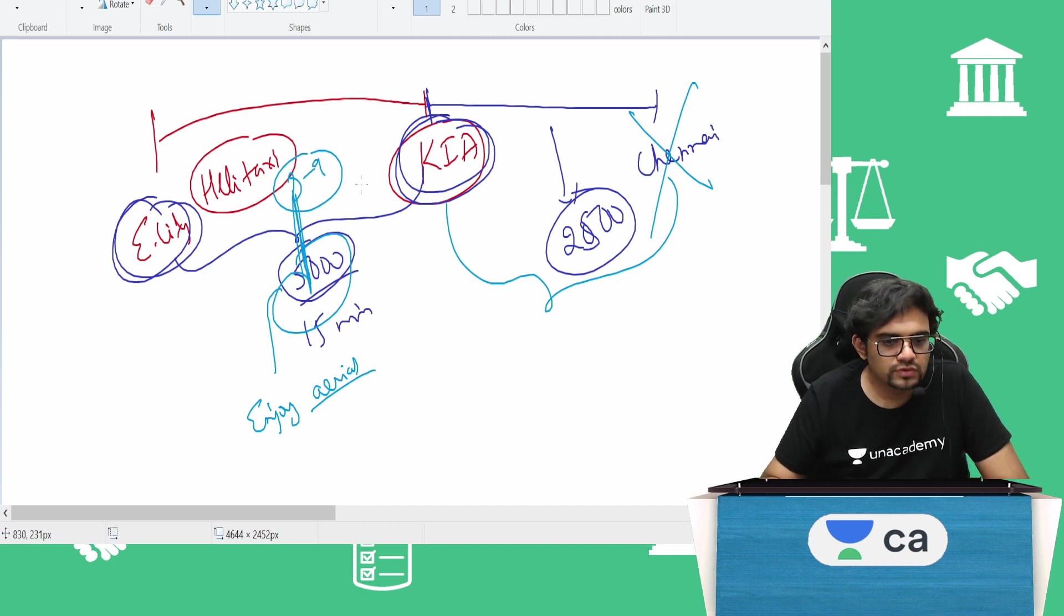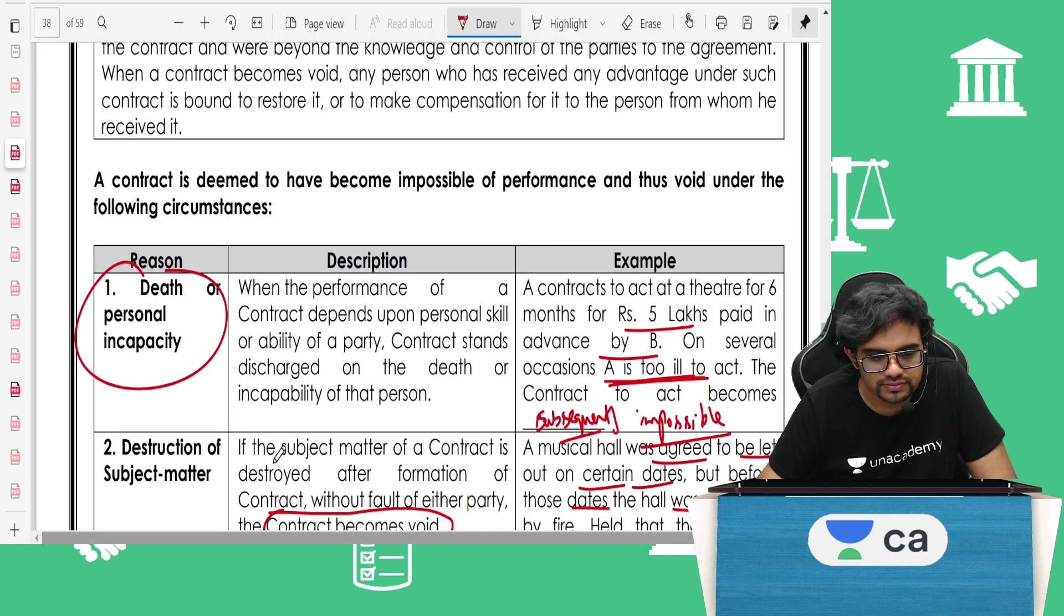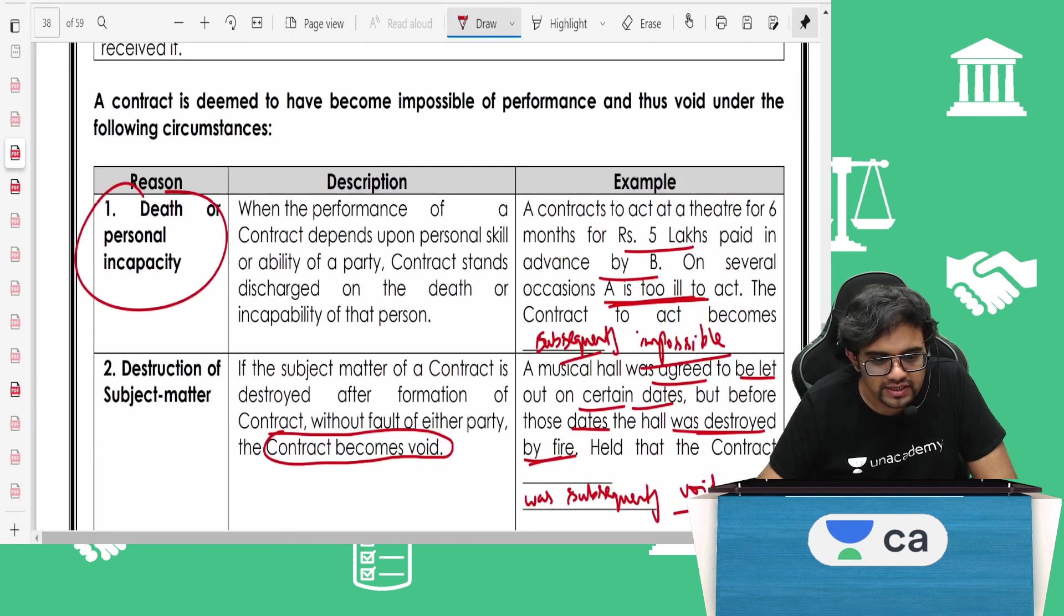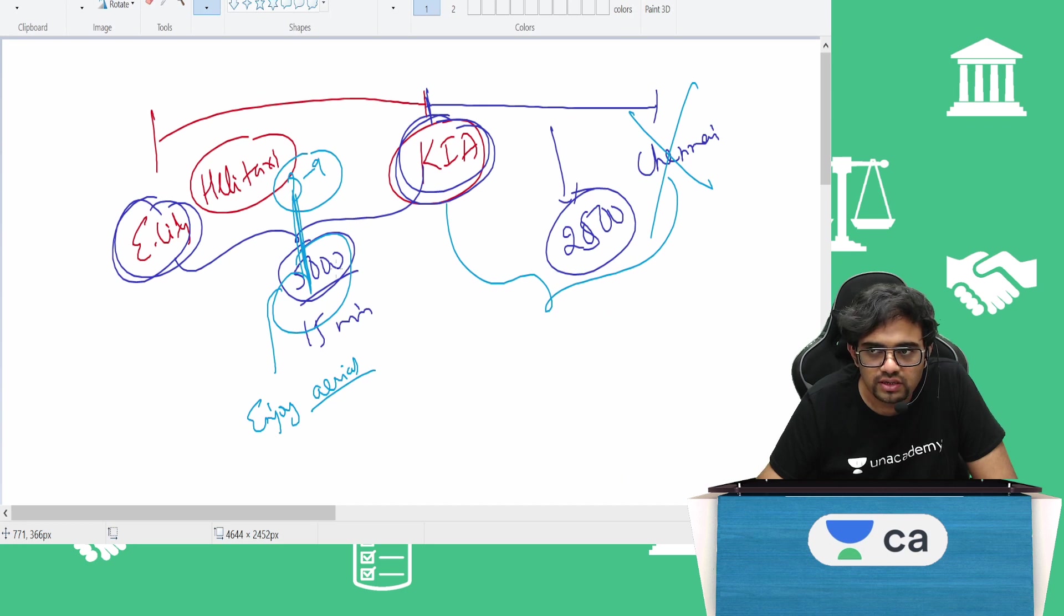Can I tell the pilot of the helicopter? Sir, stop there only. Enough. My house, I can see my house. Stop there only. Drop me down. Can you say yes or no? Obviously, no. I cannot do that.